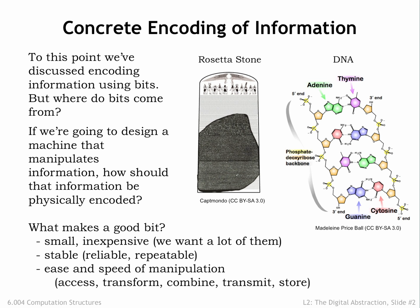But the very property that makes stone engravings a stable representation of information makes it difficult to manipulate the information. Which brings us to the final item in our shopping list: we'd like our representation of bits to make it easy to quickly access, transform, combine, transmit, and store the information they encode.